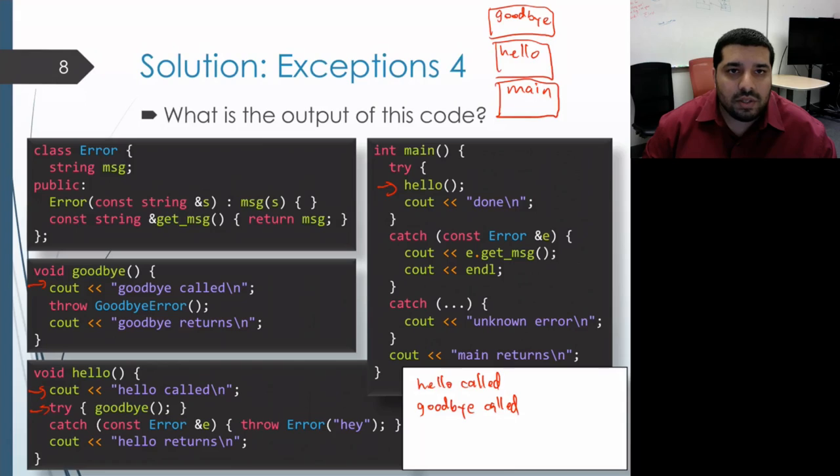And then it throws a goodbye error. So the normal flow of execution pauses and the program looks to find a try block that has an associated catch that can handle a goodbye error.